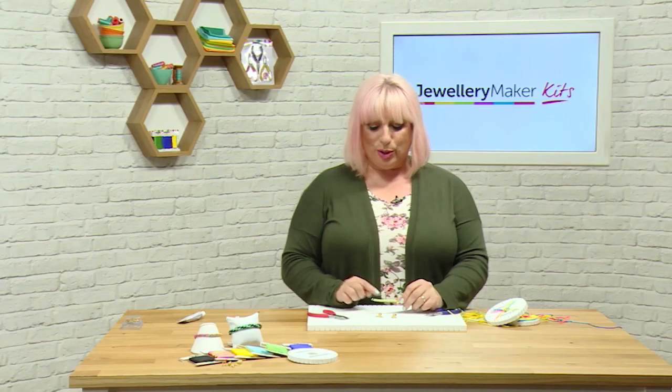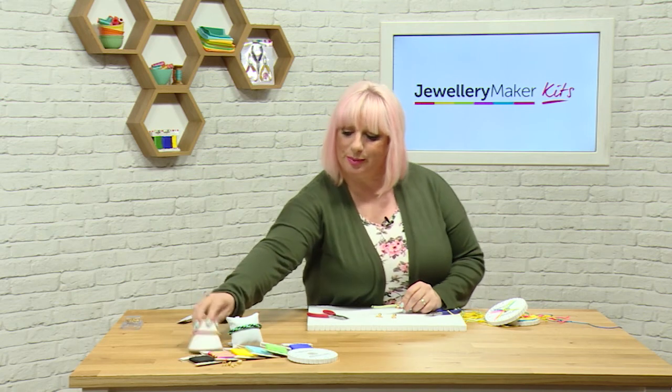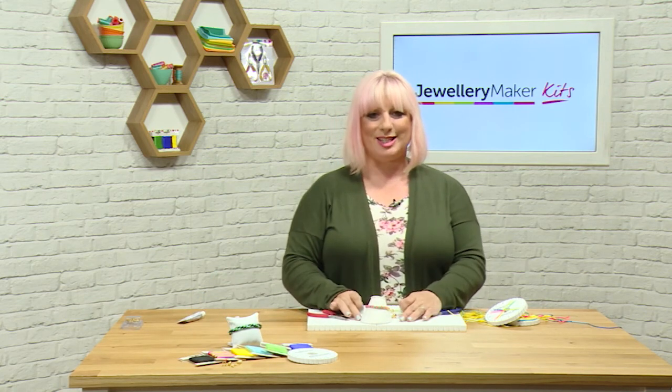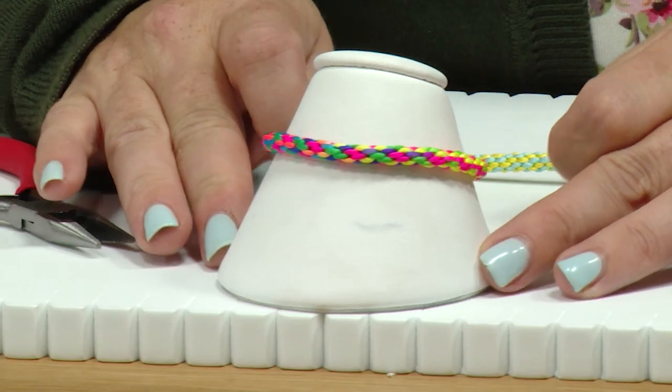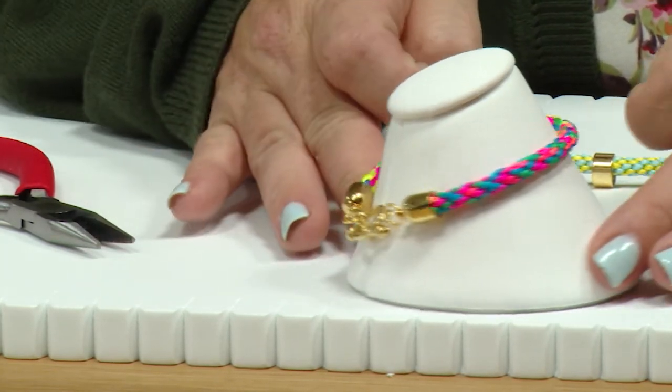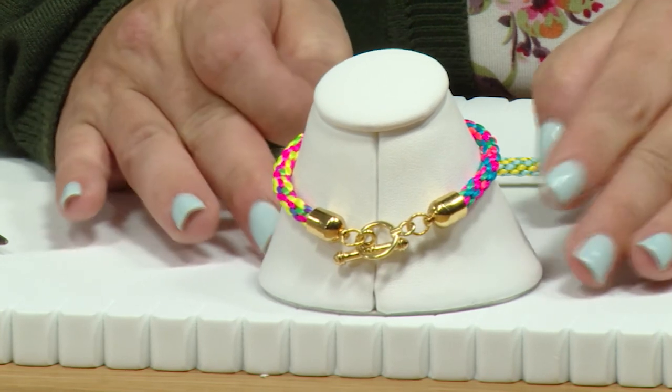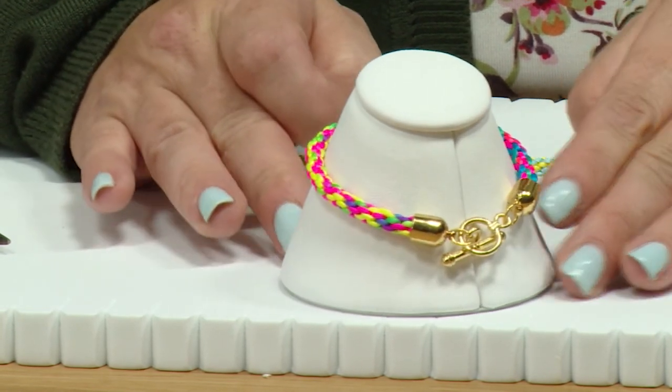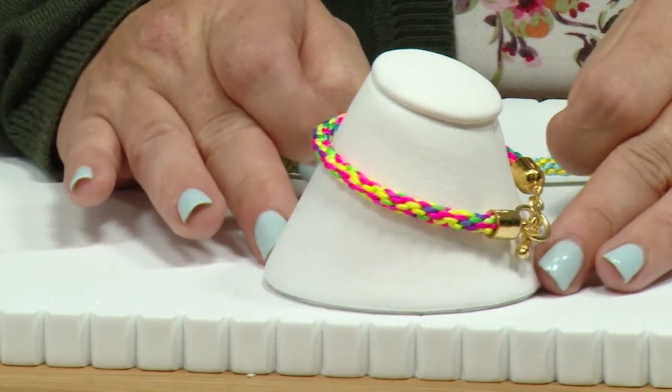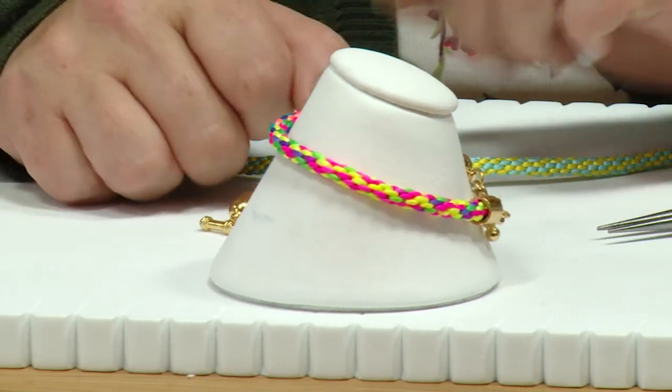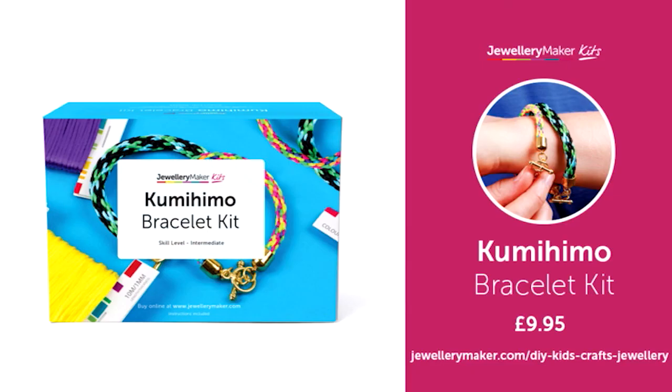So once you've glued your ends on your finished bracelet will look like this. You can see there at the back there we have our lovely toggle clasp with our end caps, everything looks very neat and professional and they're just beautiful bracelets to wear and make with all the family.